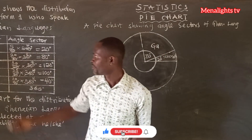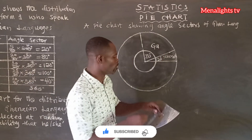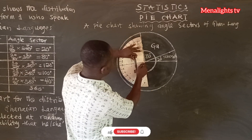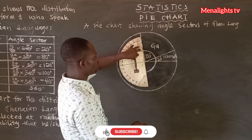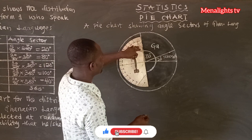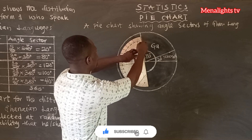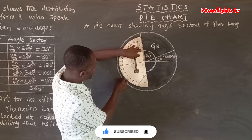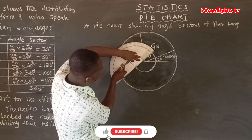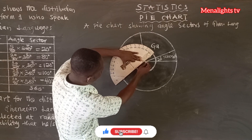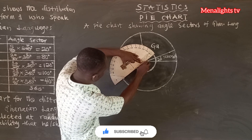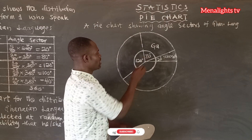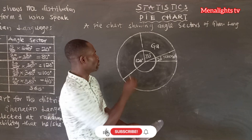After Ga, we have Twi, which is 120 degrees. In the same way, we place the baseline on the line and the center at the center point. We count 120 degrees: 0, 10, 20, 30, 40, 50, 90, 100, 120. We draw through the 120-degree mark. The angle sector is 120 degrees and that is for Twi.